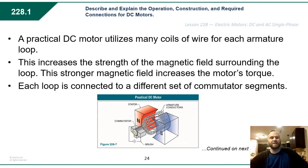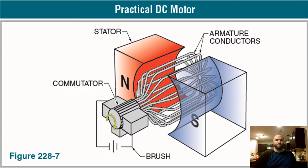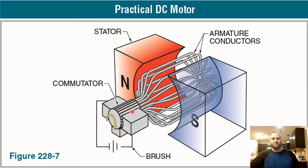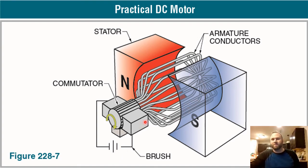A practical DC motor utilizes many coils of wire for each armature loop. As you can see in this diagram, here's the commutator with all the splits between each loop — multiple loops — so whenever one is receiving full torque, another is receiving no torque. The rotation of the motor doesn't slow down because it's constantly receiving torque on one or more of its loops.